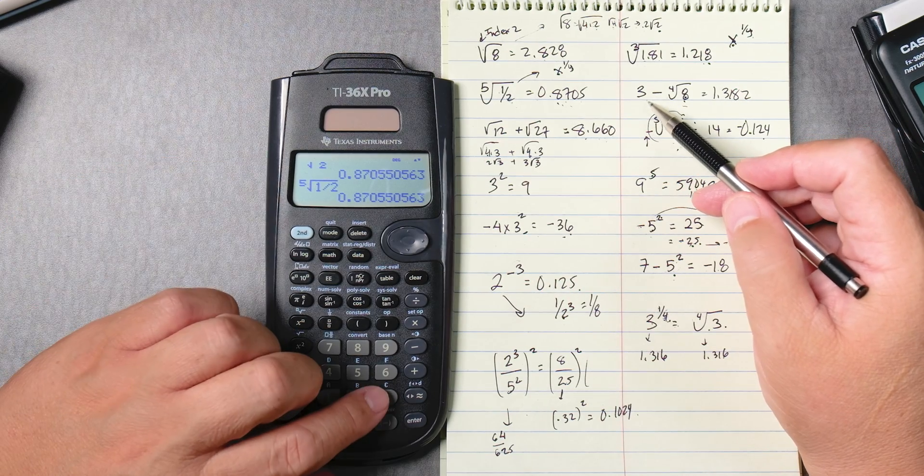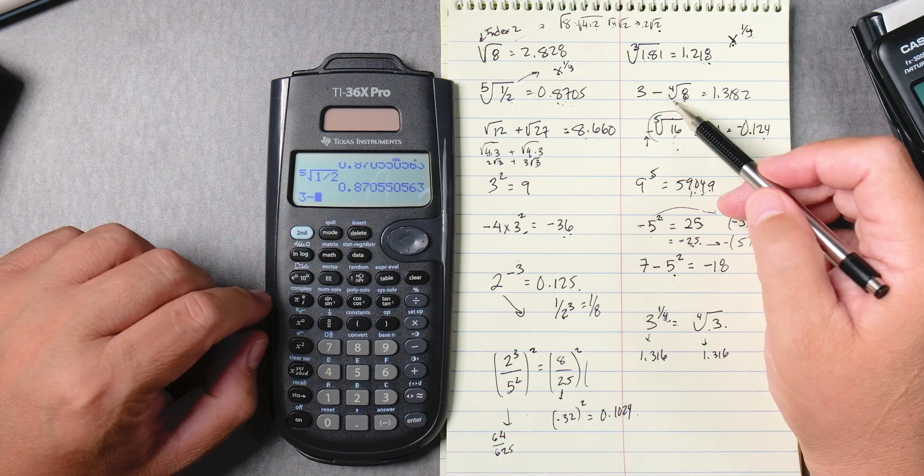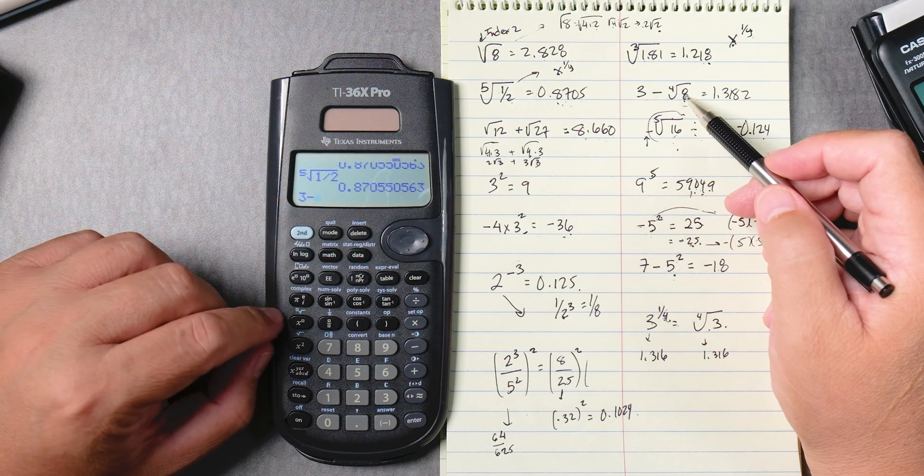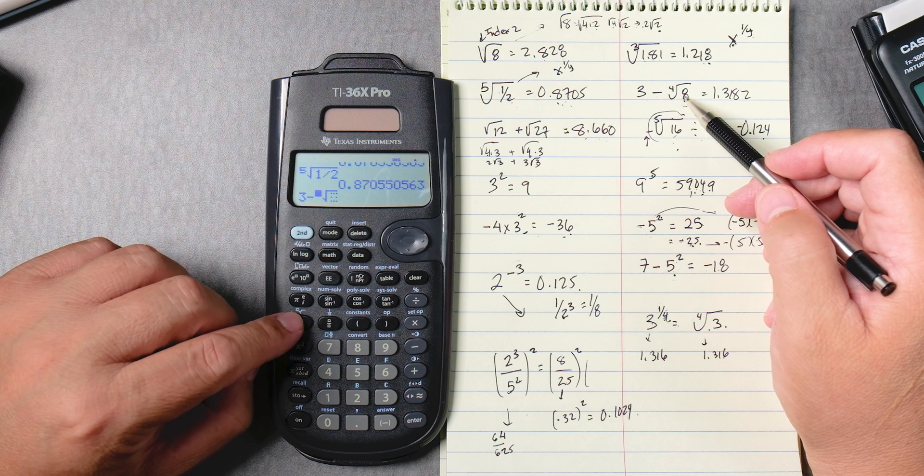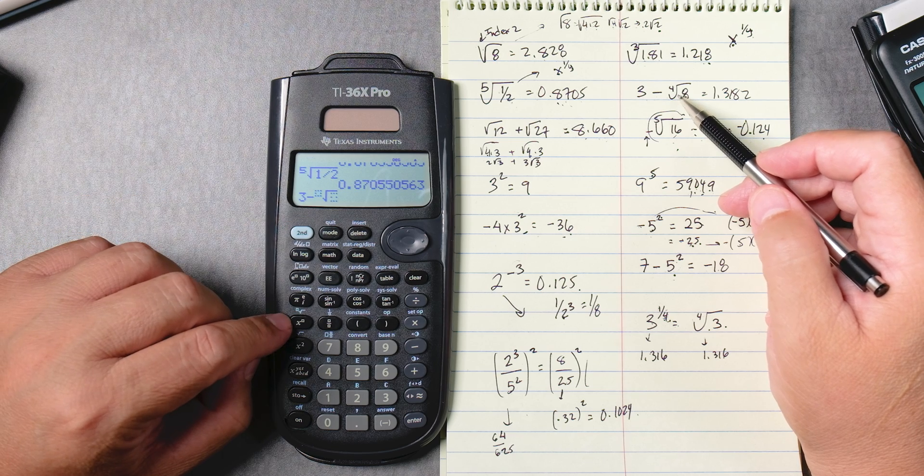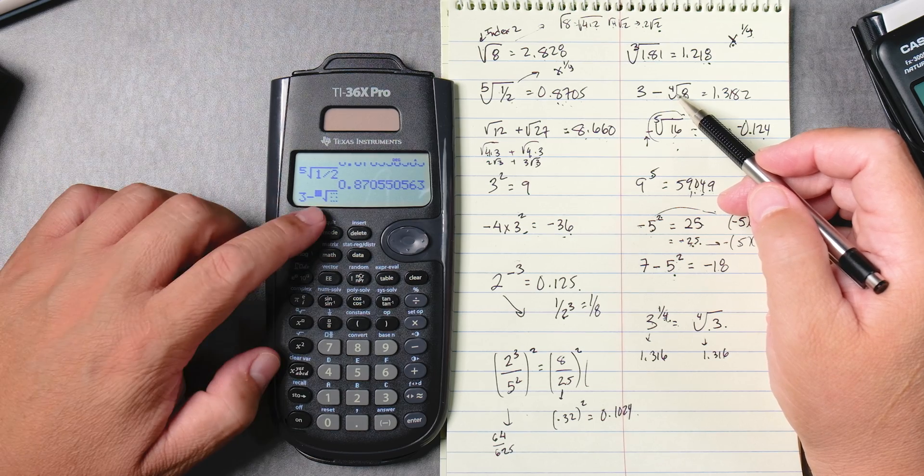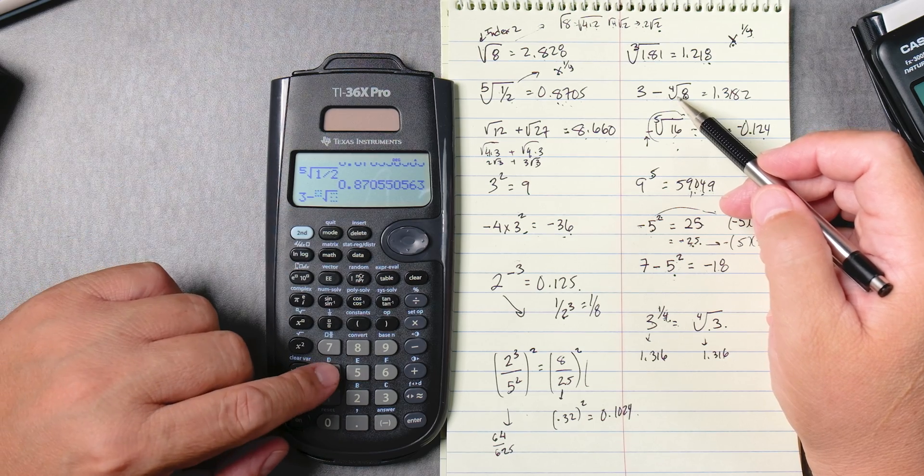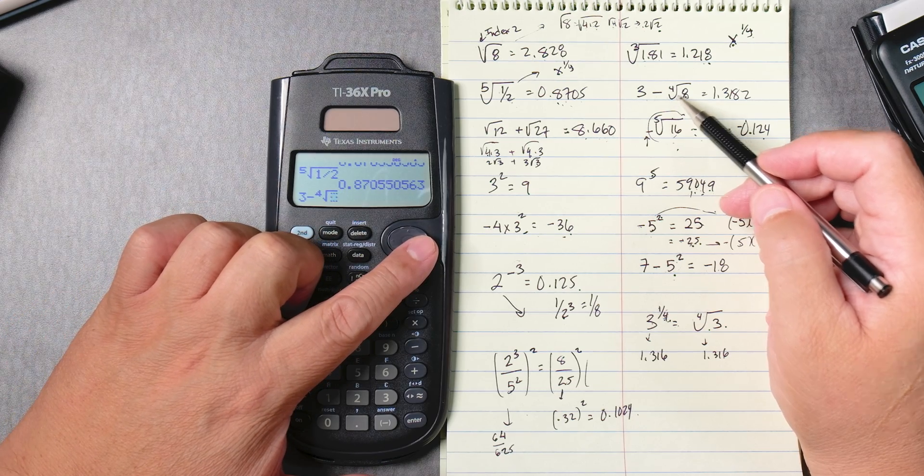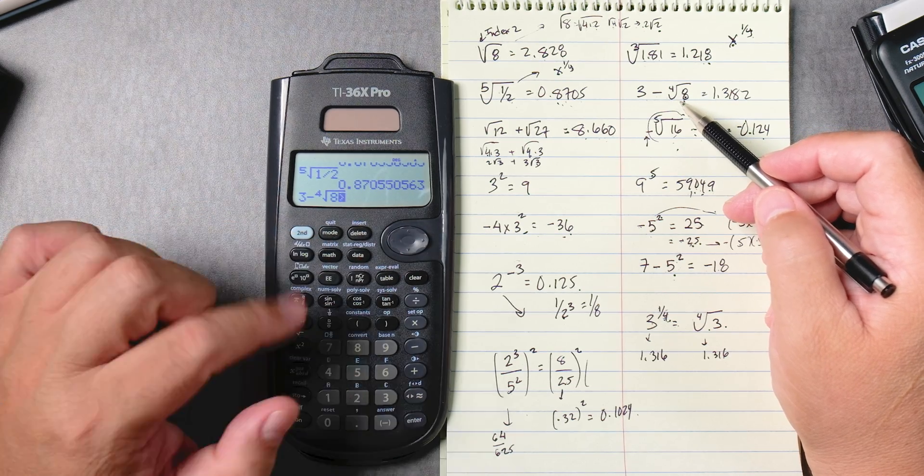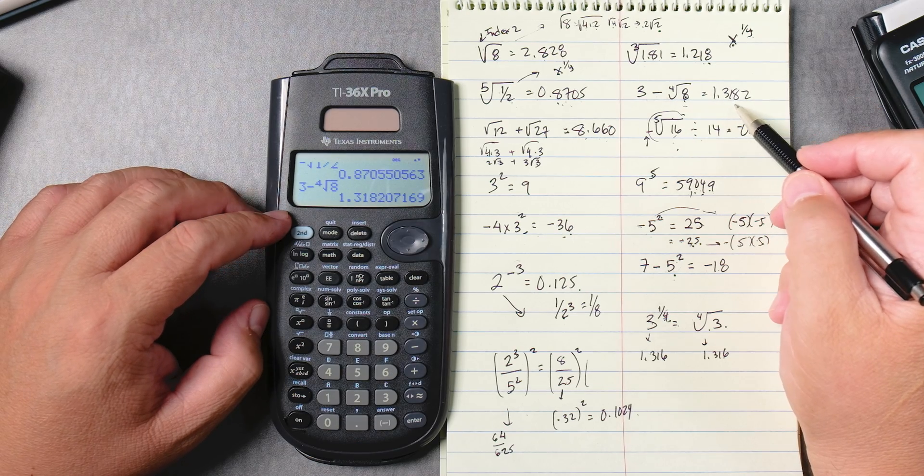This one here, we got 3 take away, it's the fourth root of 8. So we can go second, x to the box. And here, I didn't have to type the 4. It gave me the option now to give me the 4. And then I move over, I got to move over inside the radical, 8, enter, 1.3182.